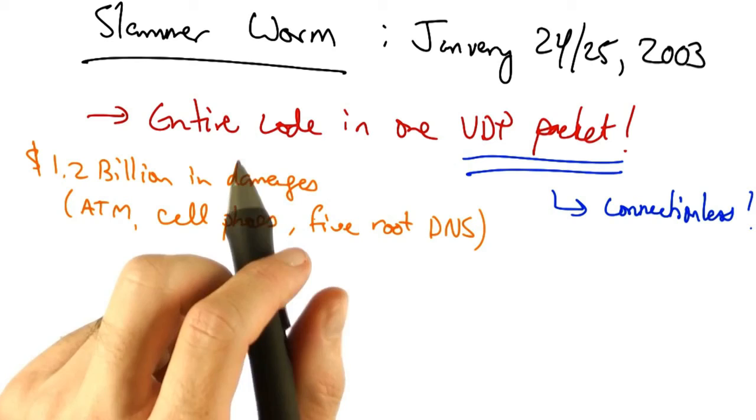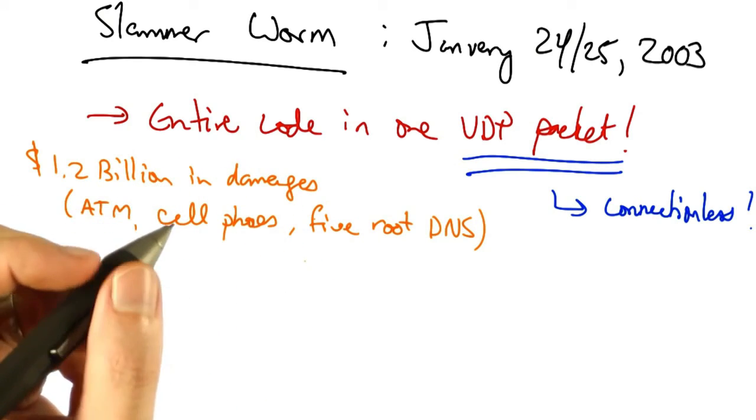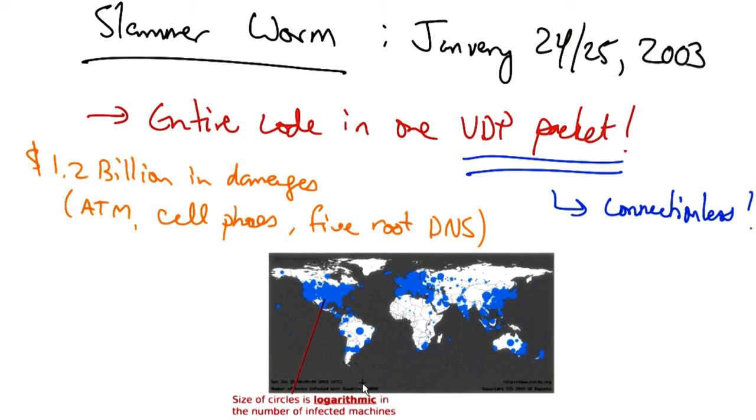The worm actually did not have a malicious payload, but the bandwidth exhaustion on the network caused resource exhaustion on the infected machines. Here is a picture of the hosts around the world that Slammer infected. This damage was inflicted in just 30 minutes due to the very lightweight nature in which Slammer spread.